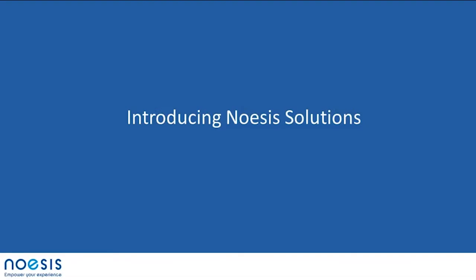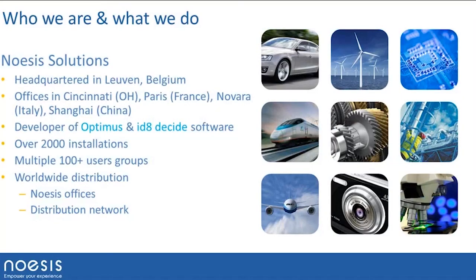Hello everybody. So first, a small word about our company. The company is called Noesis Solutions. It's a Belgian company located in Leuven, and we work worldwide with offices in Ohio, Cincinnati, France, Italy, and China, plus distributors in many other countries. We are developing two products: Optimus and Ideate. Even though we are a pretty small company, we have over 2,000 installations at different locations, with several customers having more than 100 seats at their own location, ranging from very small to very large companies.